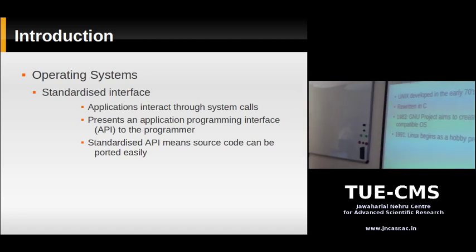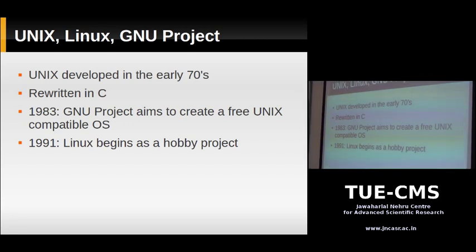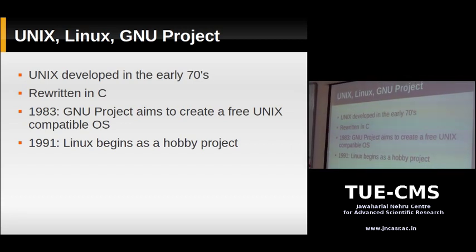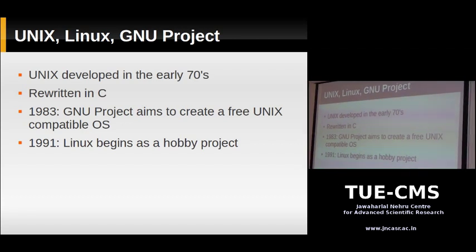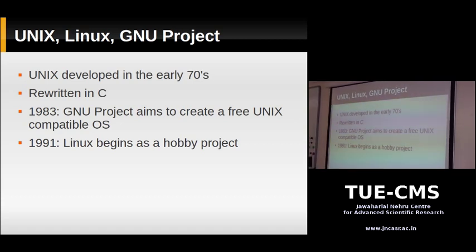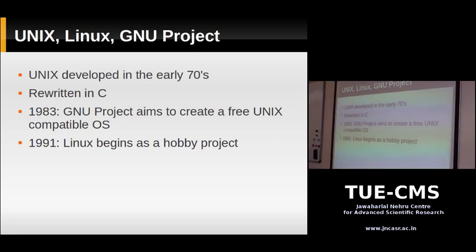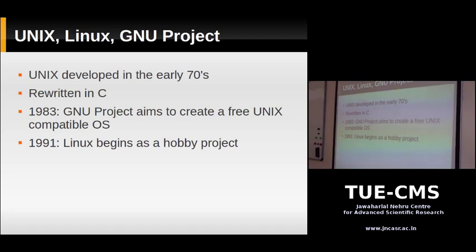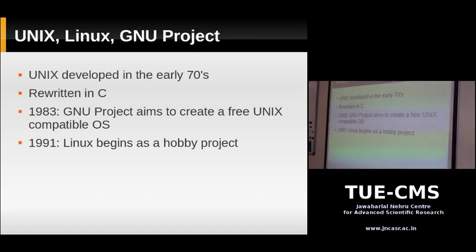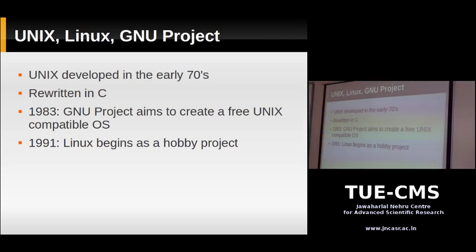Coming to Unix and Linux: Unix is an operating system written in the late 60s and early 70s. It was originally written in a very low-level language called assembly language — a language just above binary. A few years later, Unix was rewritten in the C programming language. It had a unique design and was developed at AT&T Bell Labs.